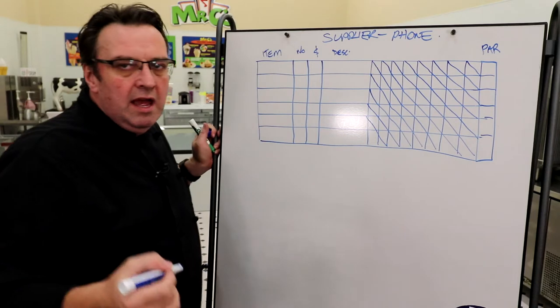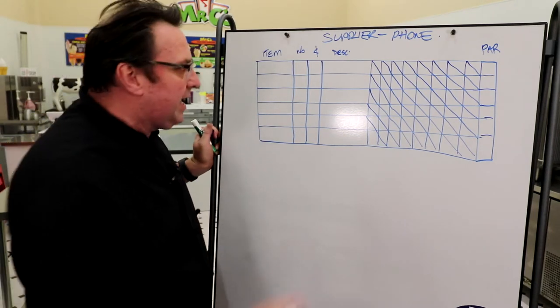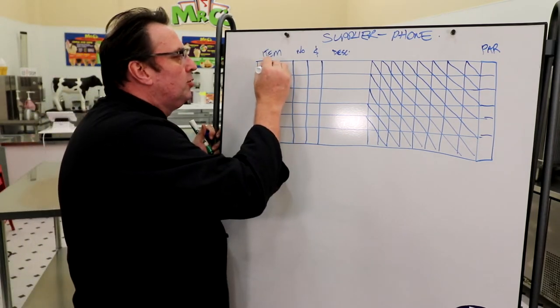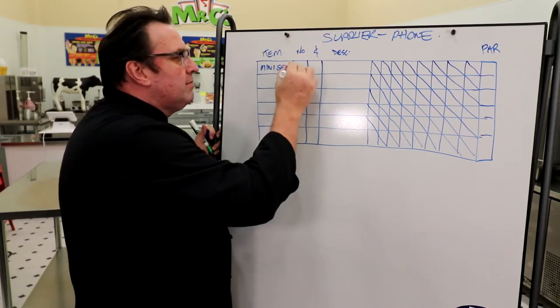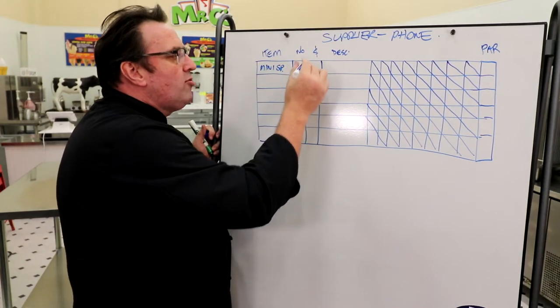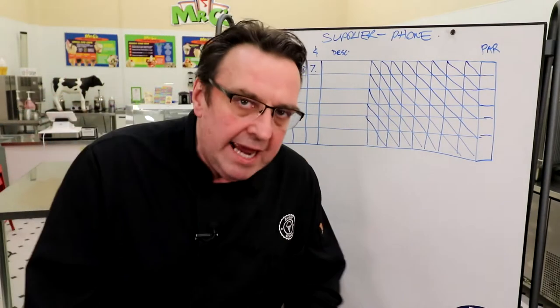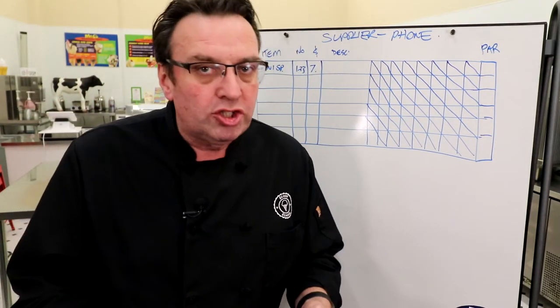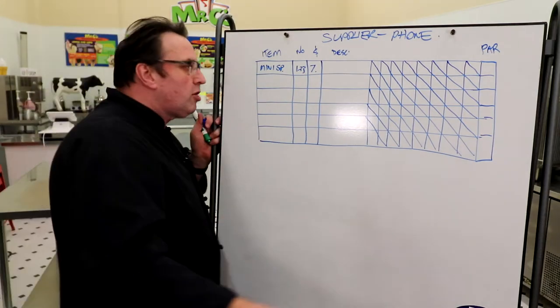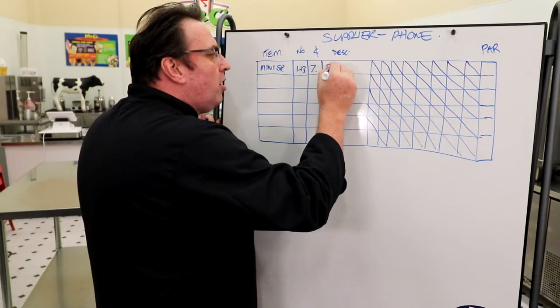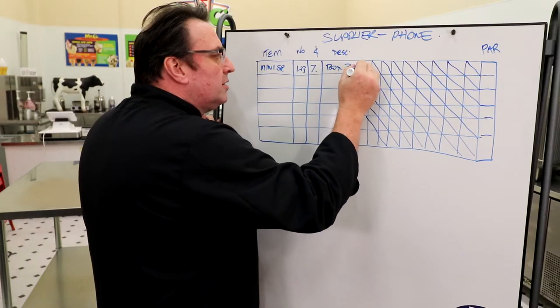So, you've got your item here. Let's say first off the rank here is a mini spoon. Its item number, let's say, is 123. And right now, we're paying $7 a box. Again, understanding what each of these products cost you is extremely important. The description, let's say a box. There is 3,000 in a box.